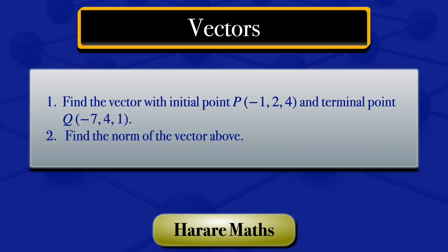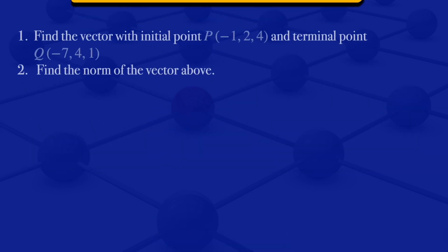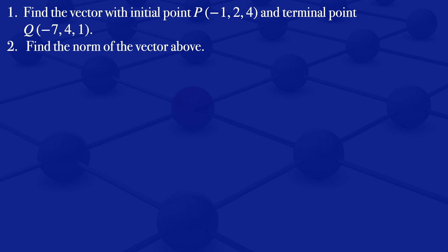In this video I'm going to find the vector with initial point P and terminal point Q, and then I'll find the norm of that vector. We are given those points—the initial point and the terminal point for question number one.